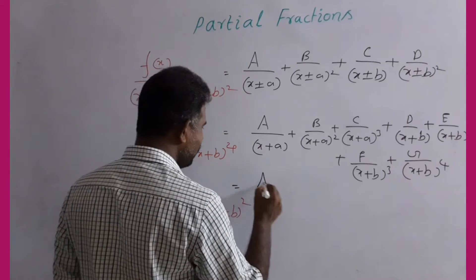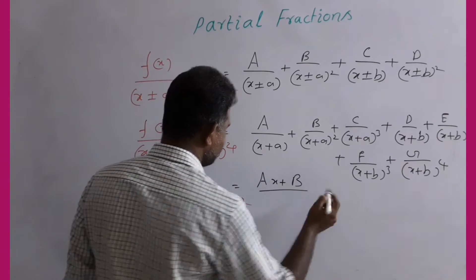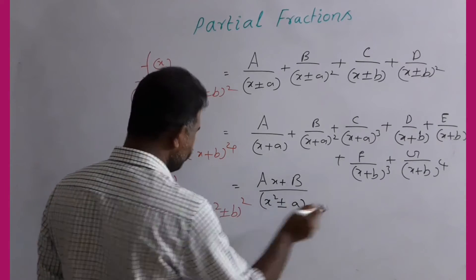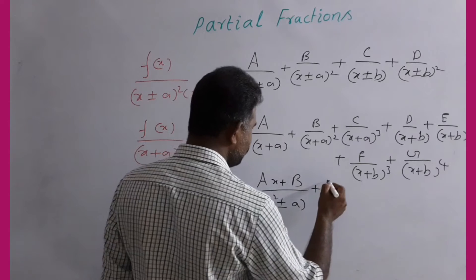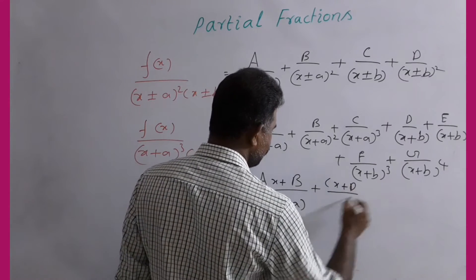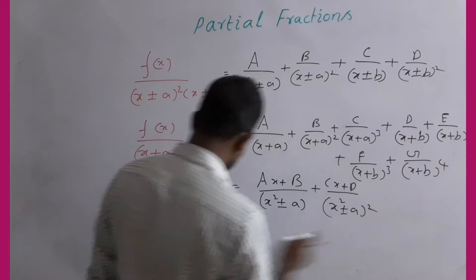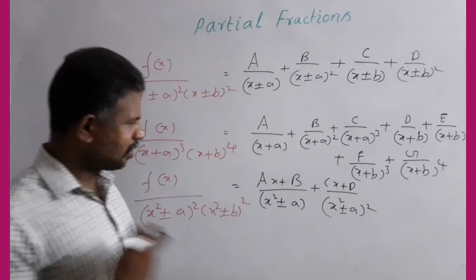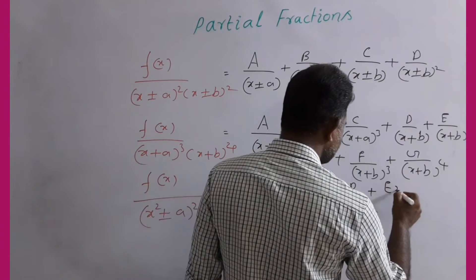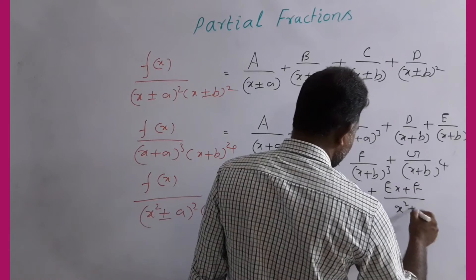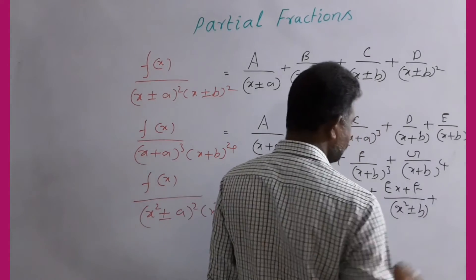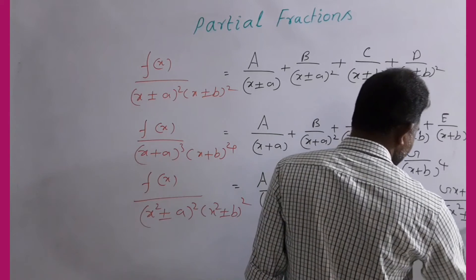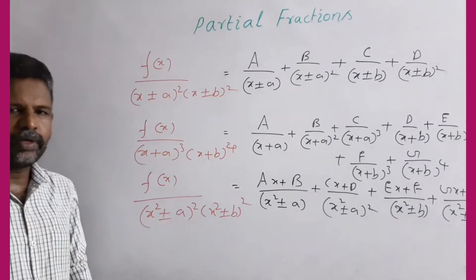For x² times x² factors, the numerator terms are of the form (Ax + B) over the square factor, and (Cx + D) over (x² + r − a)². The x² term leads to an (x + b) form in the numerator.